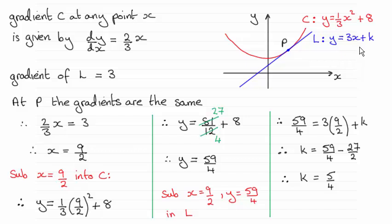But for this method anyway, what we're doing is looking at the gradients. So the gradient at any point x on the curve C is given by differentiating this with respect to x. So you'll see that's what I've done. dy/dx would equal 2/3 x if you differentiated this in the usual way.